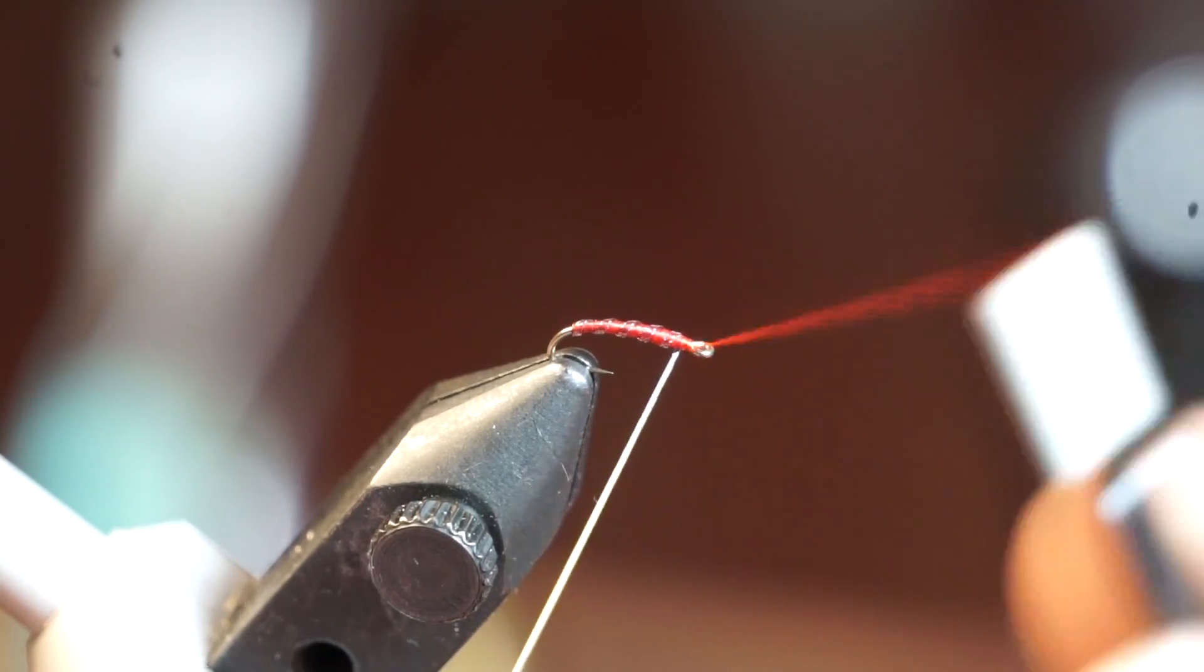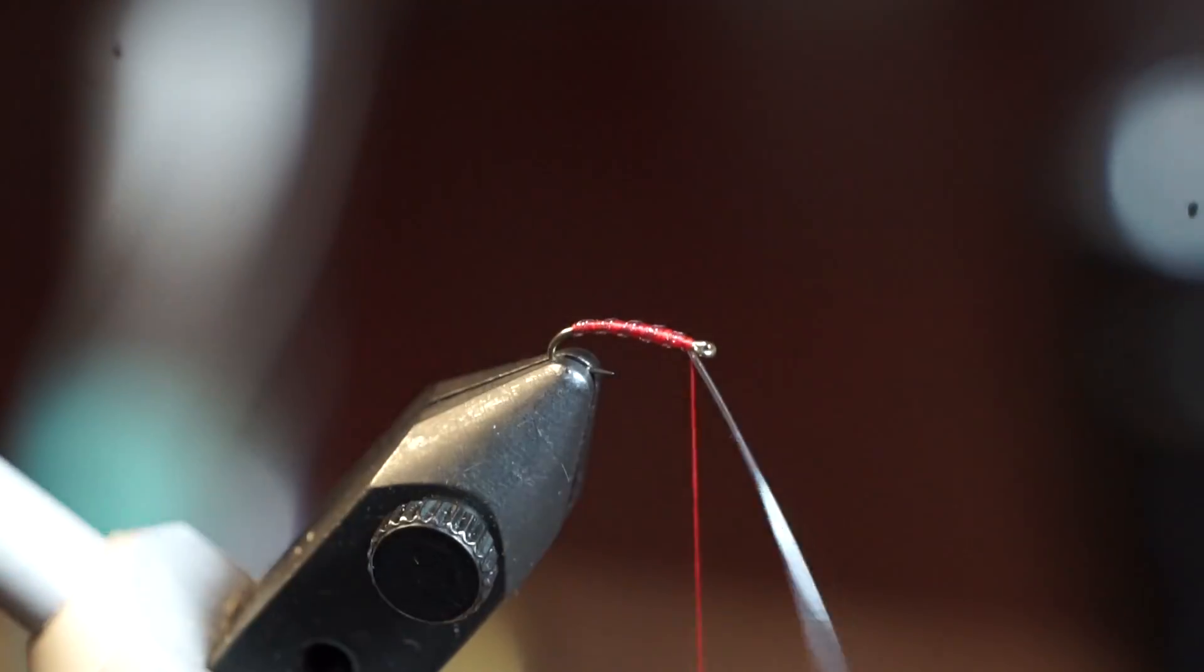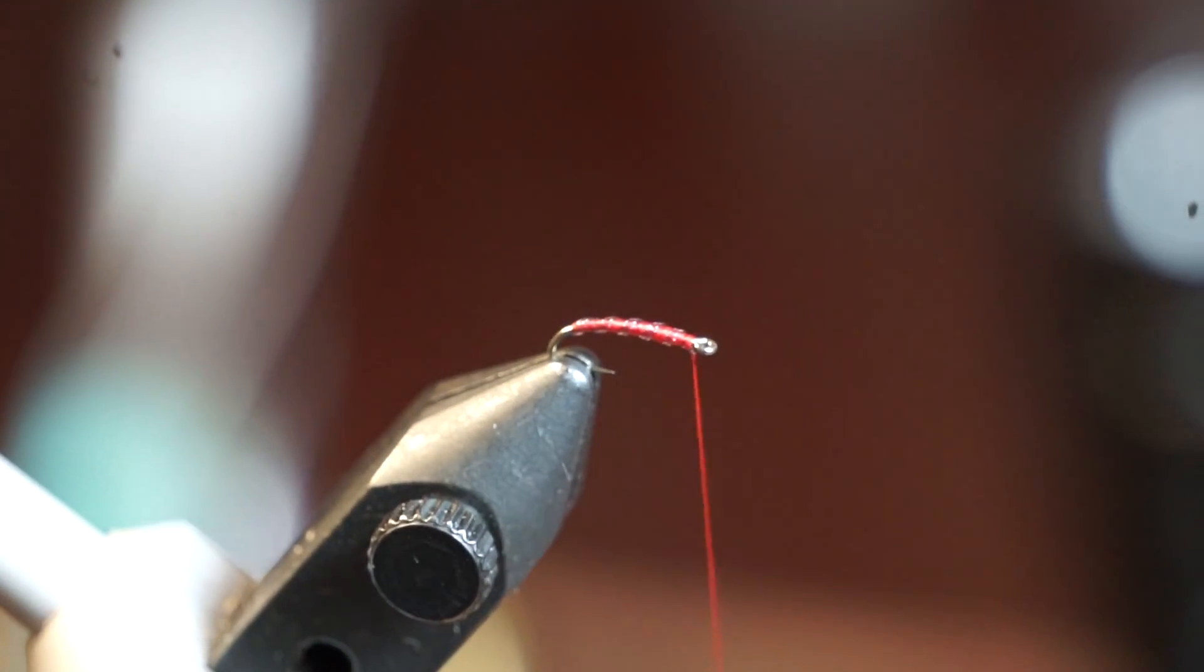If you didn't use your bobbin cradle with the rotary feature on your vise, then just unwrap the thread a few times before capturing the tubing. Once the tubing is captured, stretch it tight and snip off the waste.